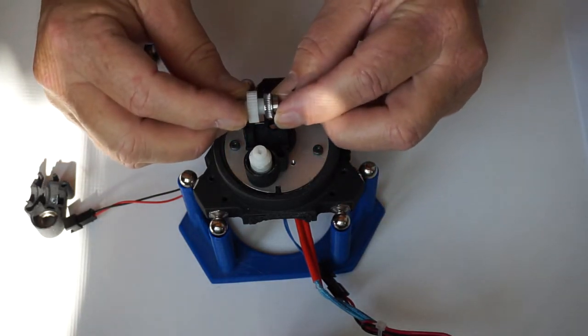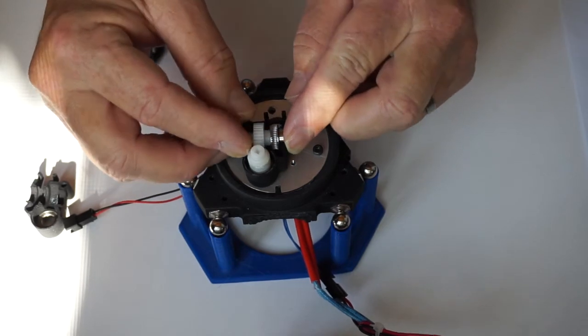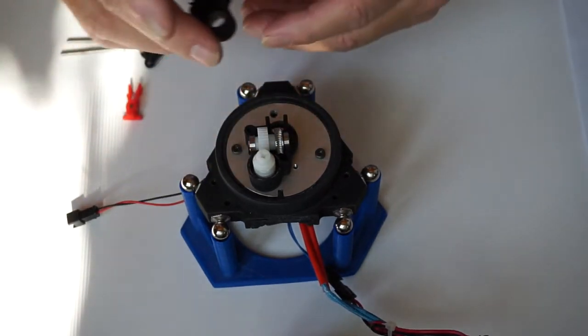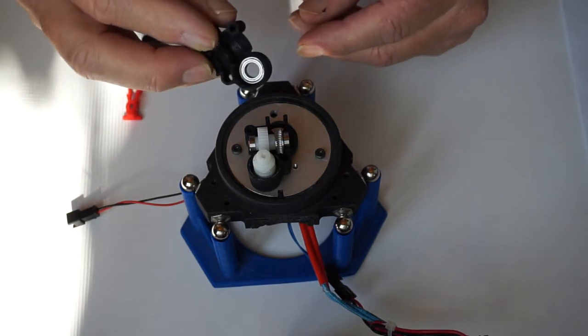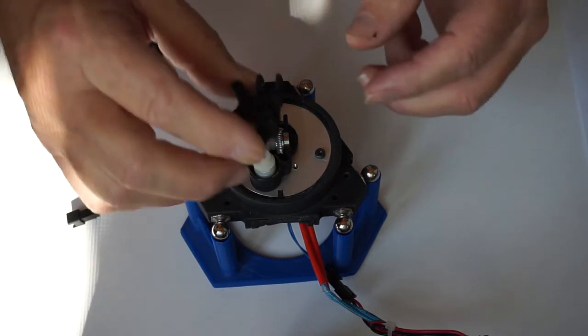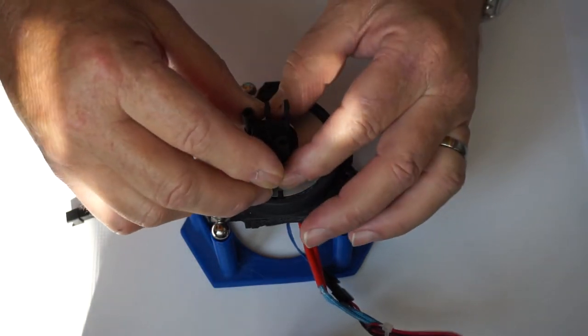The gear set with the hob slips in then. This is the second half of the Nimble, again with the bearing already inserted. Place it on top.